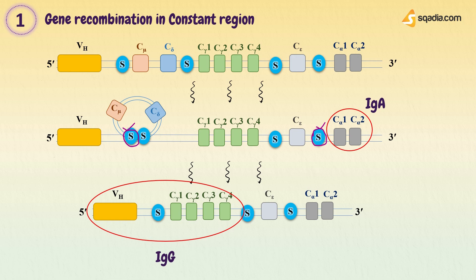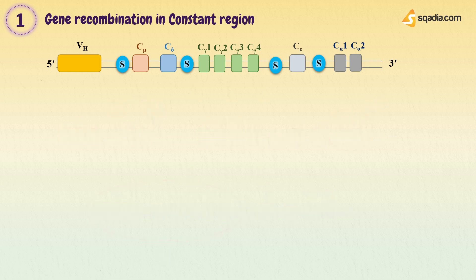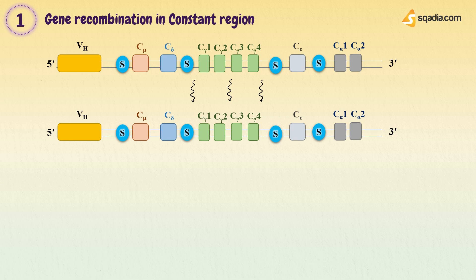Now, in case when there is no antigen and so no recombination is needed in constant region, then the first antibody produced by B cell will be IgM. As there is no switching, the CH exons attached to variable region is C mu. So the antibody produced will be IgM.